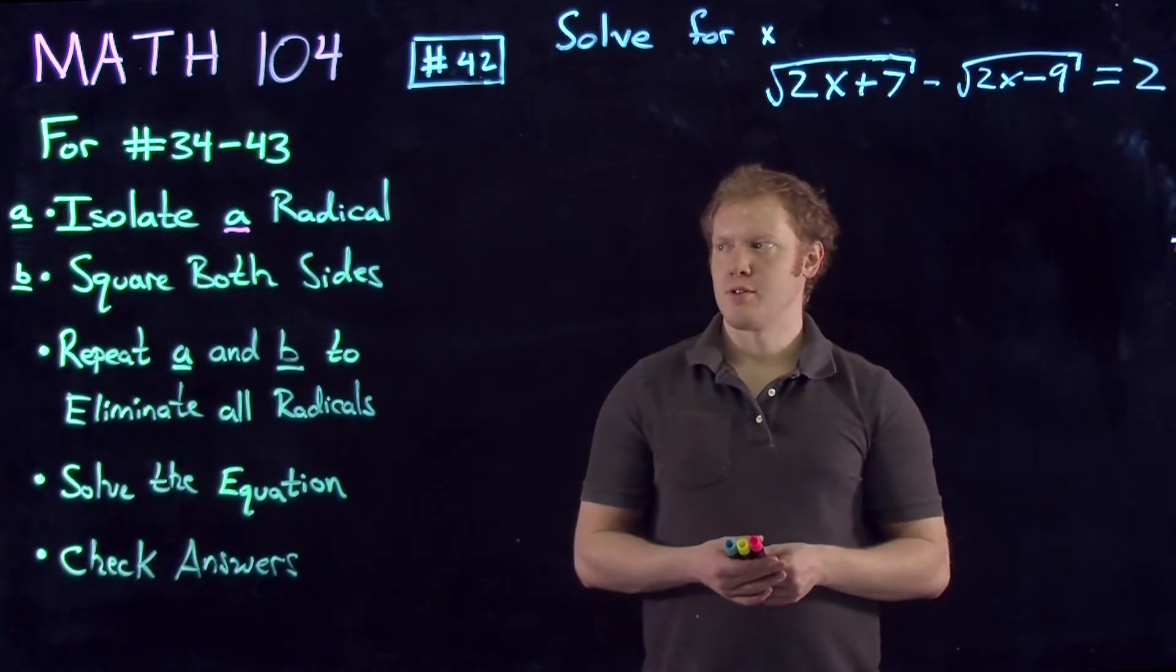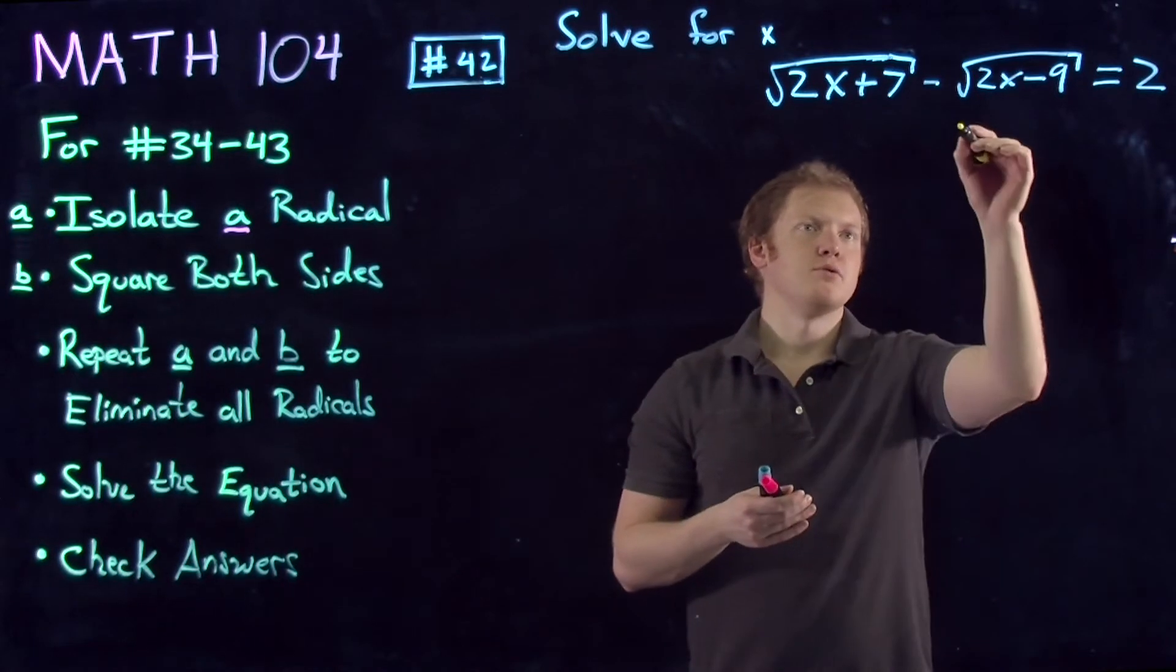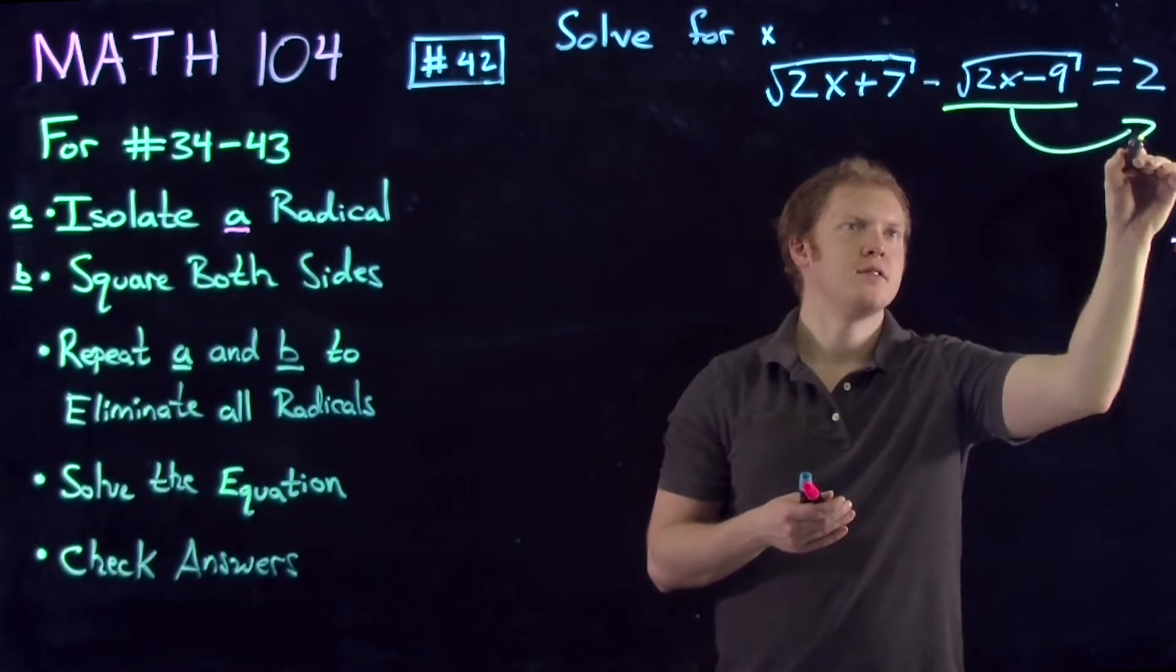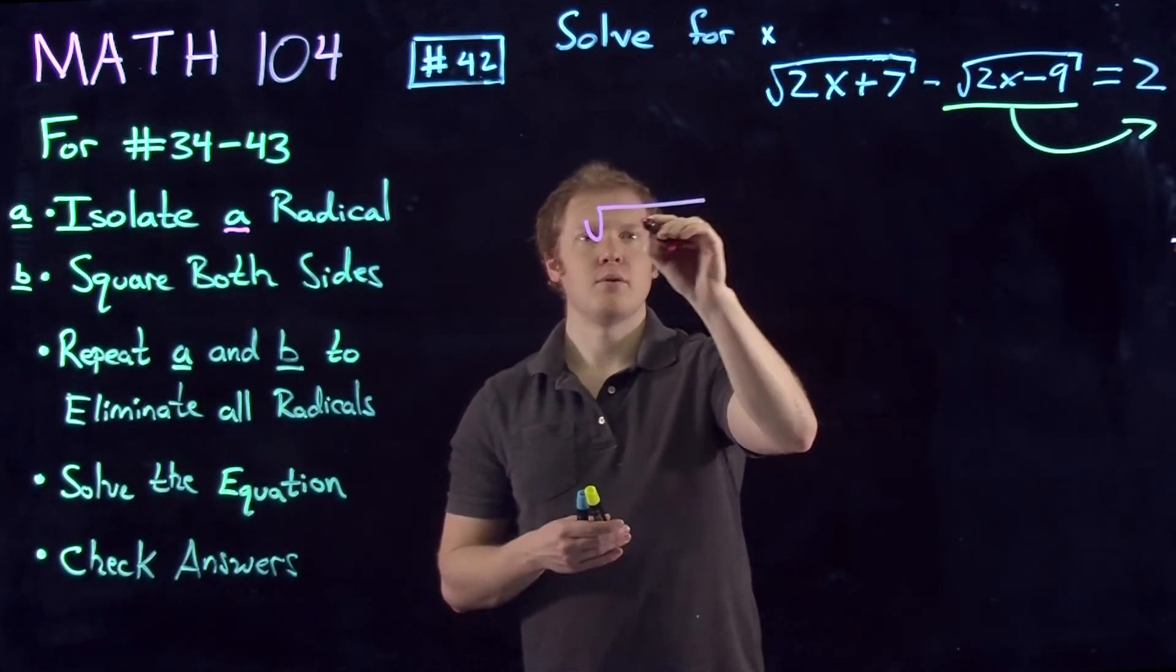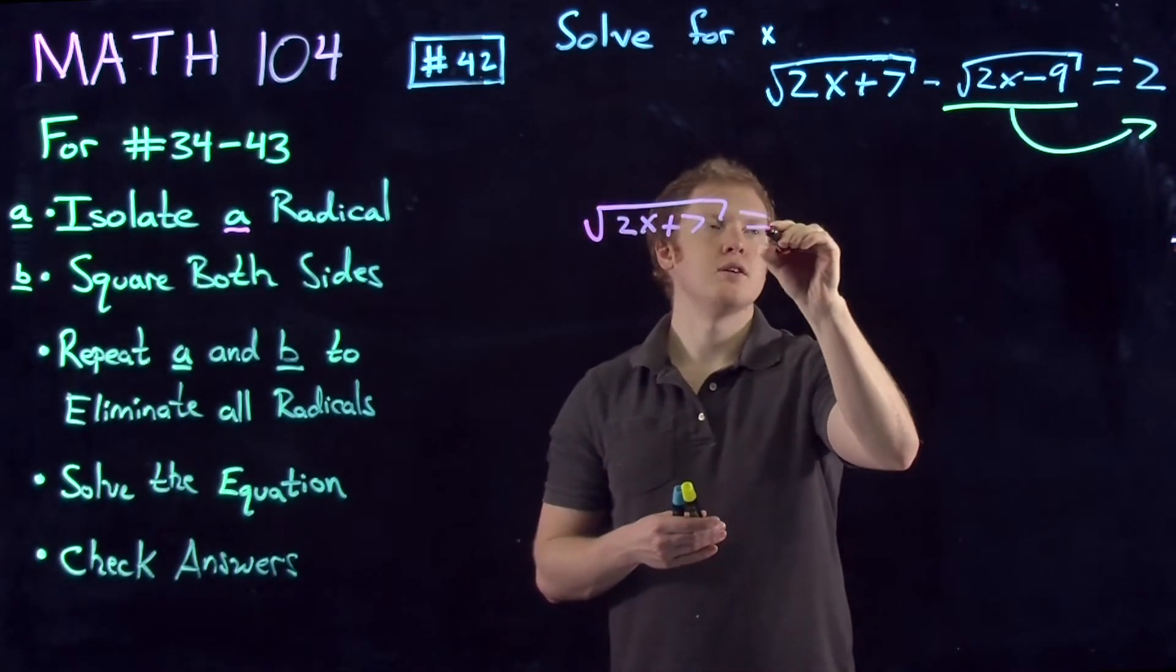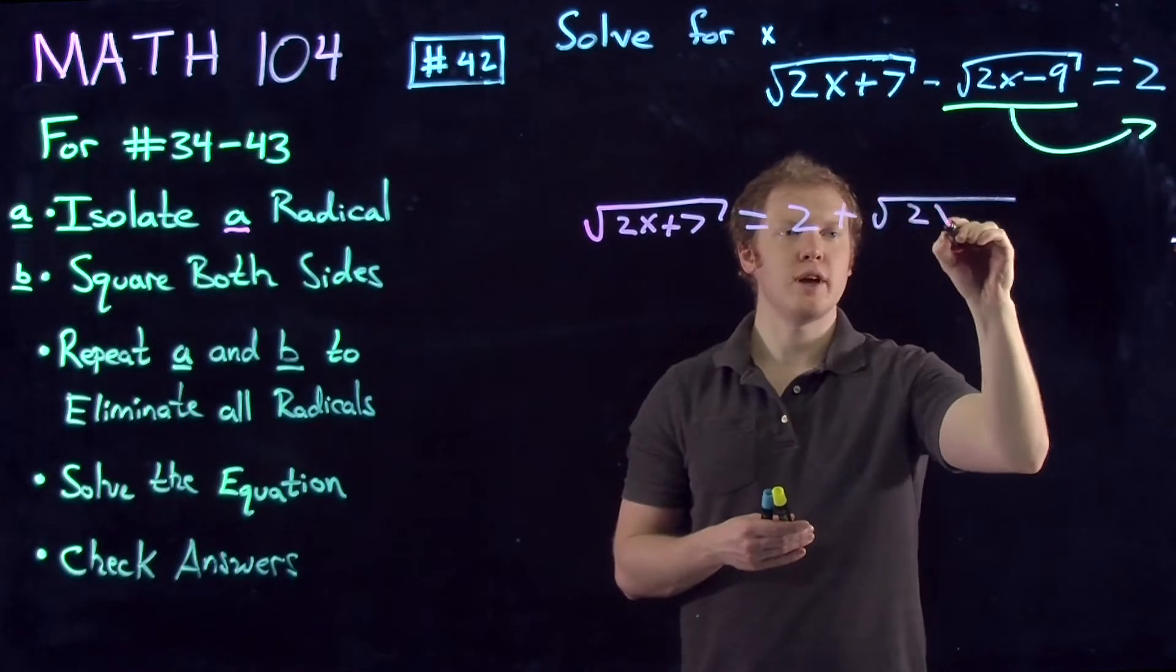What we want to start with is step A: isolate a radical. We will do so by moving the square root of 2x minus 9 to the other side, which gives us the square root of 2x plus 7 equals 2 plus the square root of 2x minus 9.